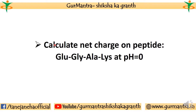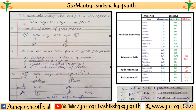This is our given question: calculate the net charge on this peptide at pH 0. First we considered 2 amino acids in a peptide; now we are looking at 4 amino acids and their calculation at the given pH. So we have to follow those steps step by step as I explained in the last video.